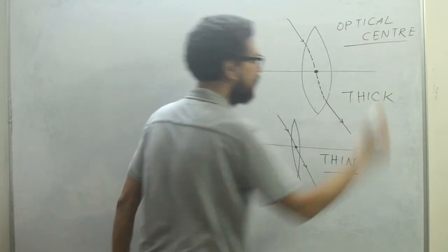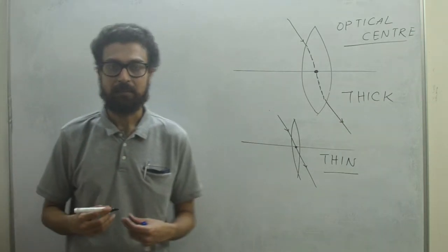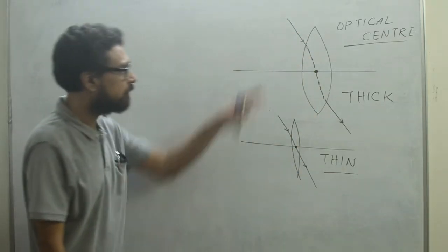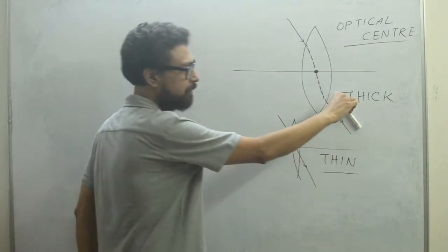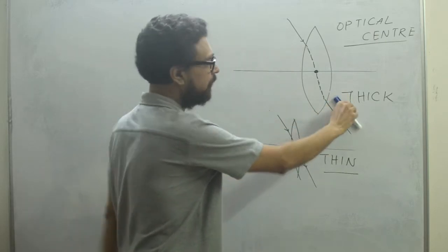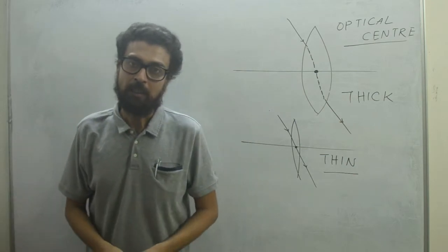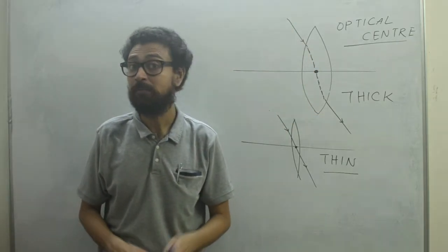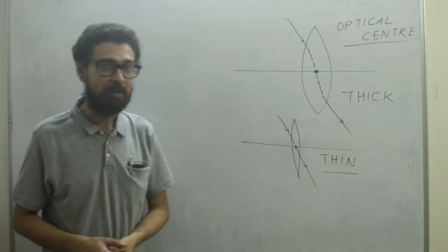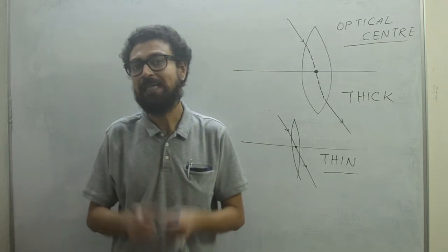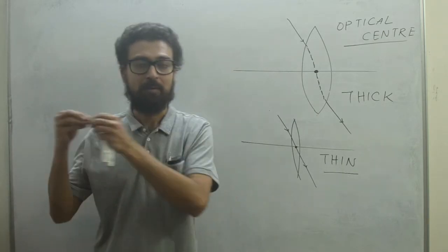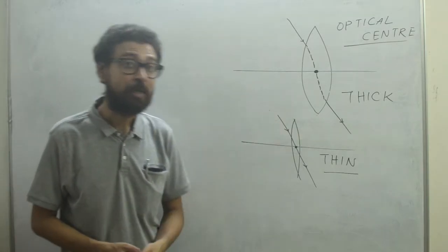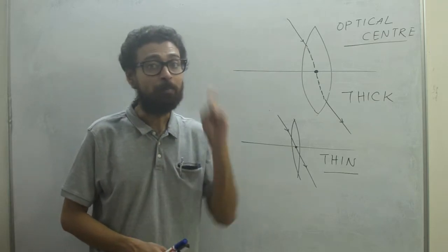We have to define optical center in two ways. First, if you take a thick lens and a ray of light goes through it — when it finally comes out from the lens it is parallel to the incoming ray. The trace of this ray will intersect the principal axis at a fixed point, which is called the optical center of the lens. Remember: optical center is the only point from where we can calculate any distance — of the object, the image, the focus, or other things. It is similar to the pole in spherical mirrors.